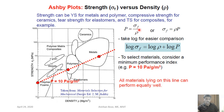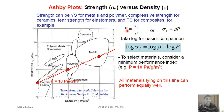Since σF and density are involved, we go to the chart with strength on the y-axis and density on the x-axis. In that chart, the ratio σF/ρ is the performance index. This is a log-log plot, so we take the logarithm of both sides. After taking logarithms: log(σF) = log(ρ) + log(P), where log(P) is the y-intercept of a straight line with slope 1.